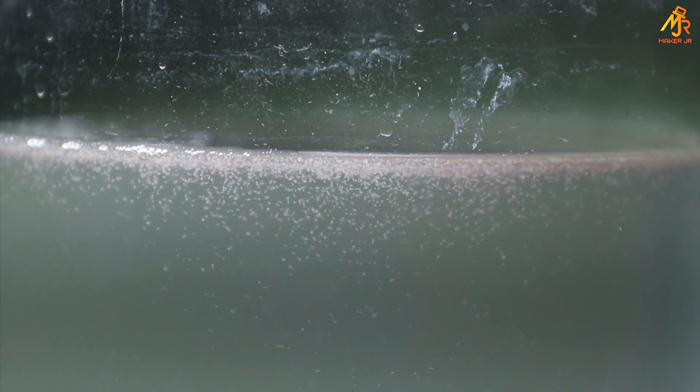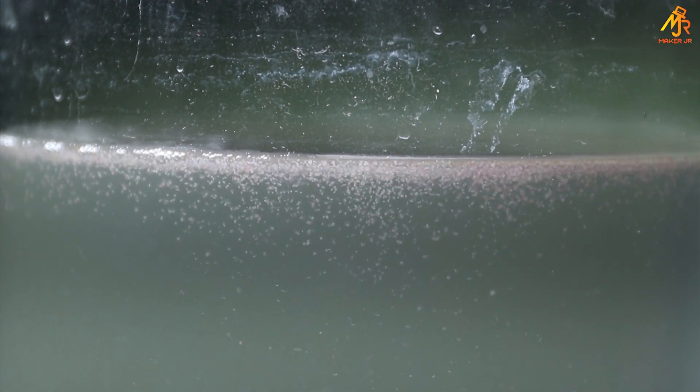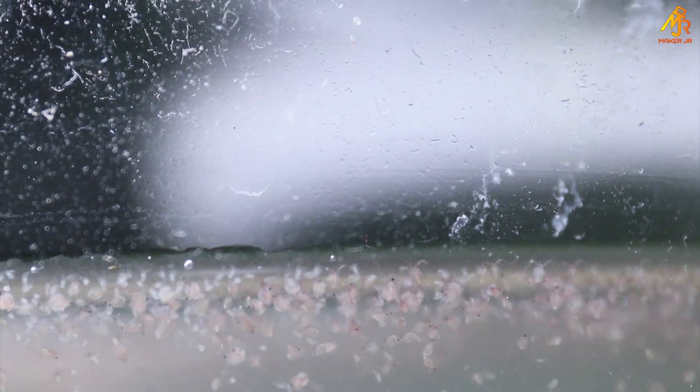This is day 2 and you can see many smaller moina swimming. These are the broods that are produced by the female through asexual reproduction. Just look at that population, it's that easy to culture them.